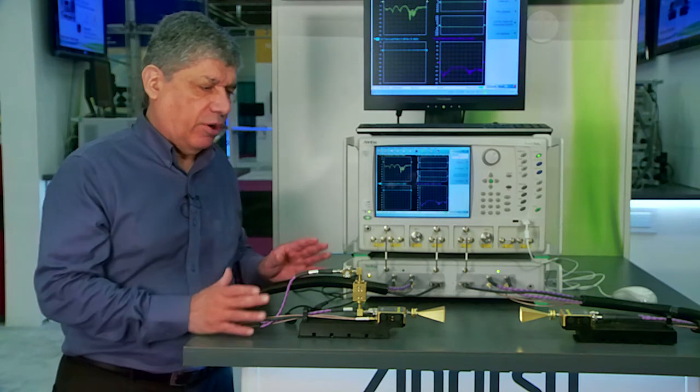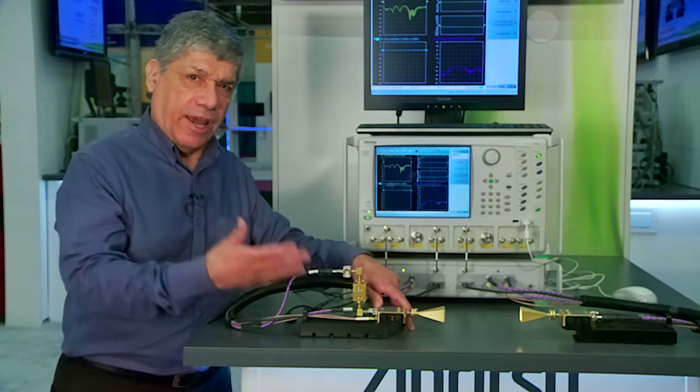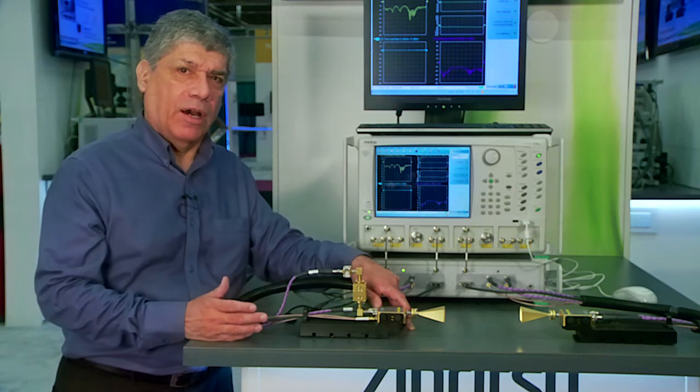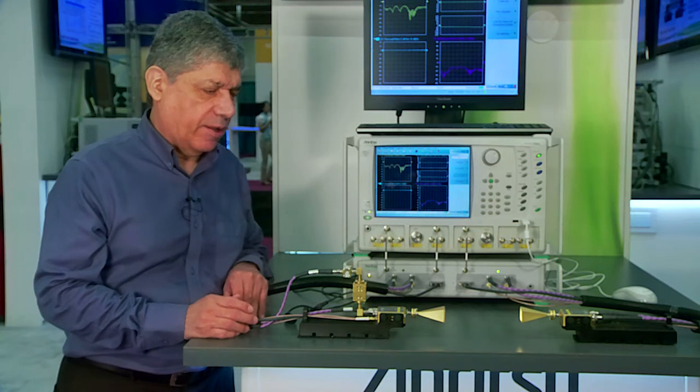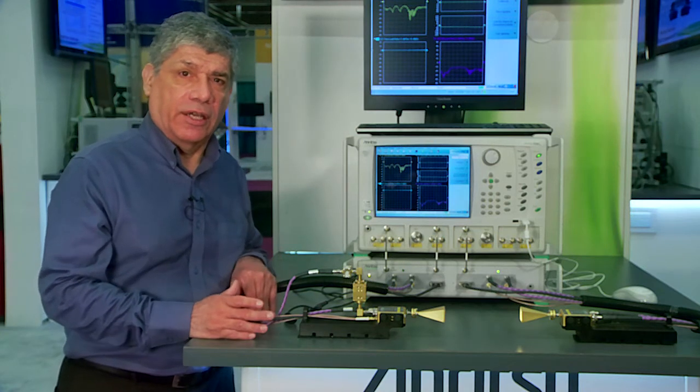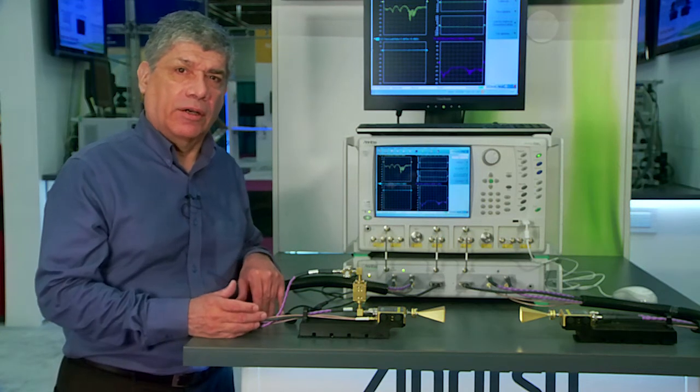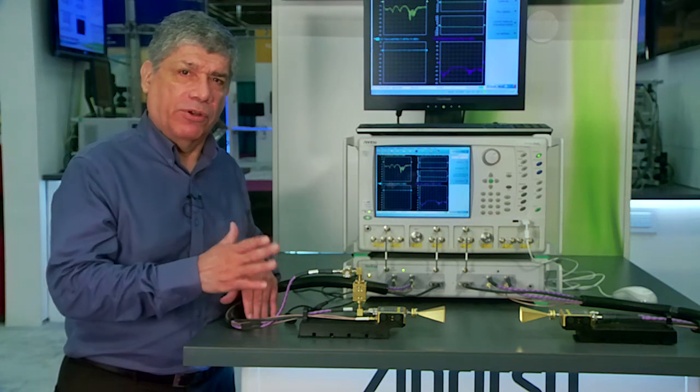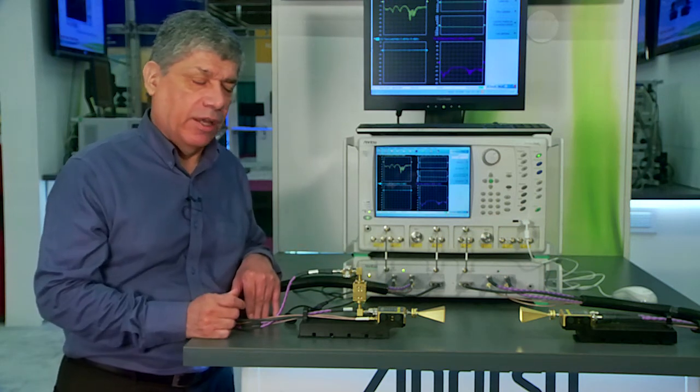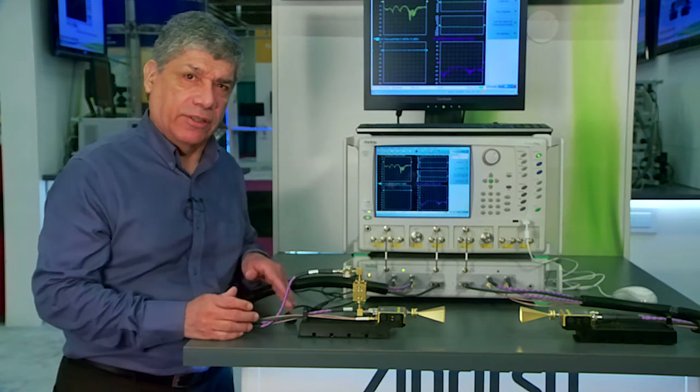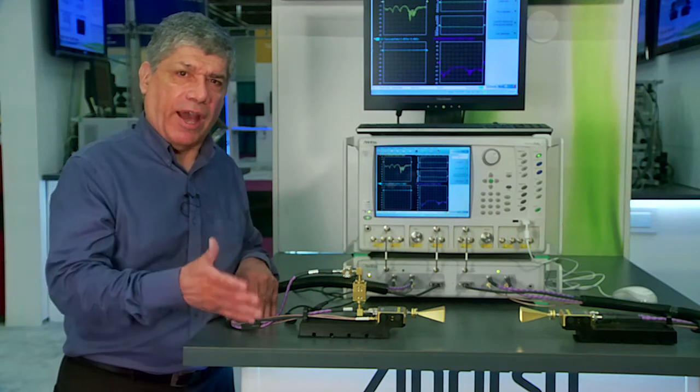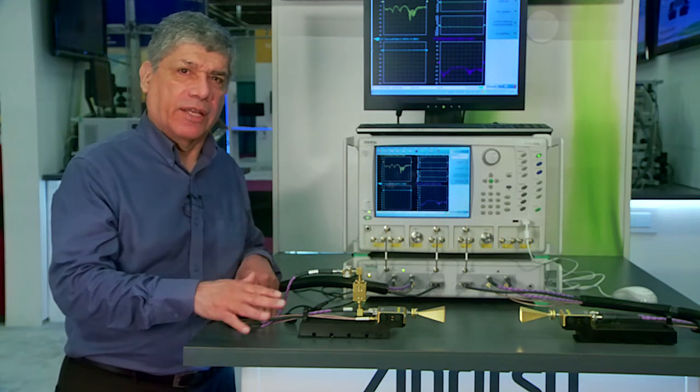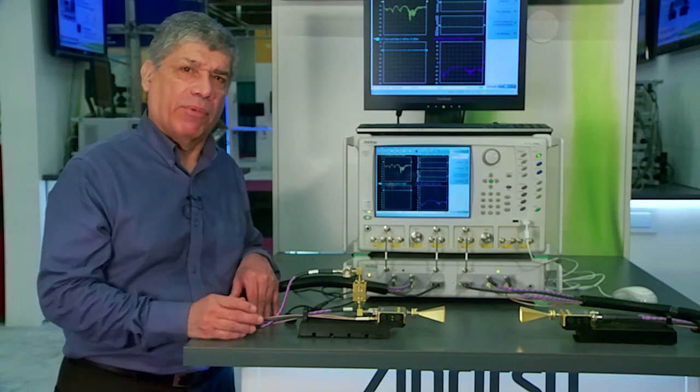So the end result is you can start off with a standard millimeter wave module, get the standard output power that you normally would get for the different types of waveguide bands that you're interested in, and then if you needed on occasion a higher power up to whatever your amplifier can provide, you can inject that signal into the module, still use your samplers, and get your very accurate, stable reference SWR or S-parameter measurements.